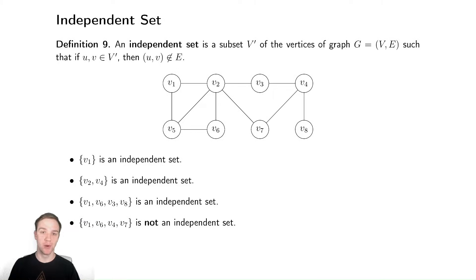Our next NP complete problem is the independent set. First step is understanding what an independent set is. An independent set is a subset of the vertices of a graph such that if two things are in the independent set, then they are not connected by an edge.